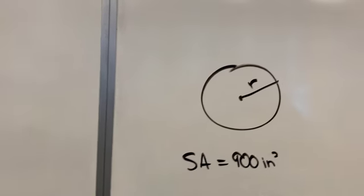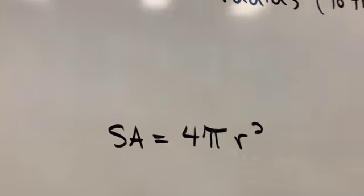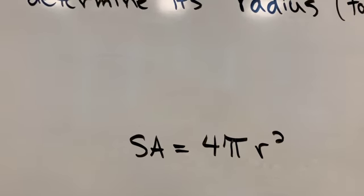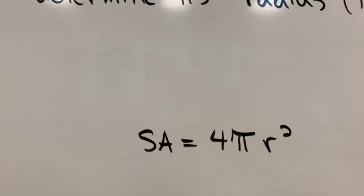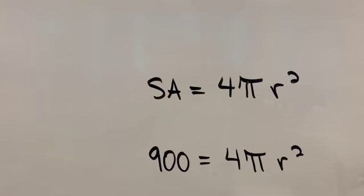So surface area equals 4πr² is the formula that I would use. That's going to be the most direct route. Substitute in the fact that we know that SA is 900.